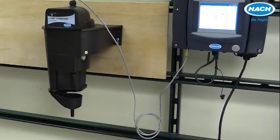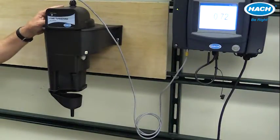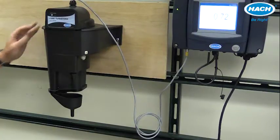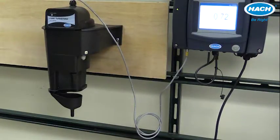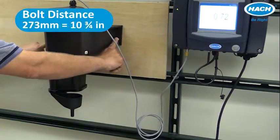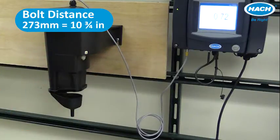If you're replacing an existing 1720e or FilterTrac 660 process turbidimeter, it's very easy to replace with the 5400 because the two mounting bolts are exactly the same from the previous instruments to the new mounting brackets, 10 and 3/4 inches apart.